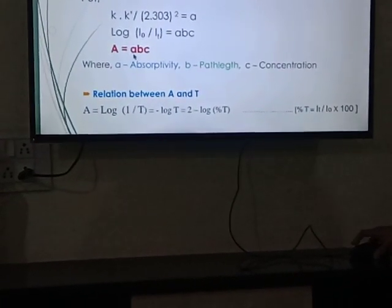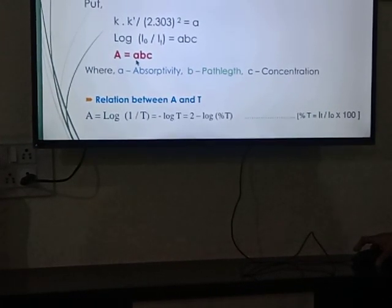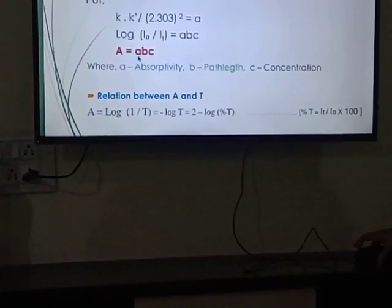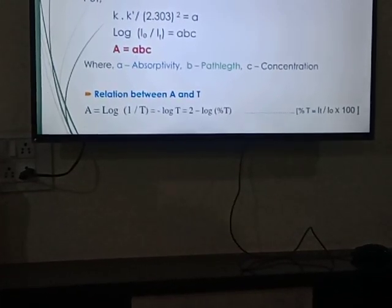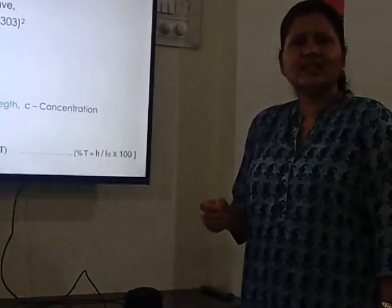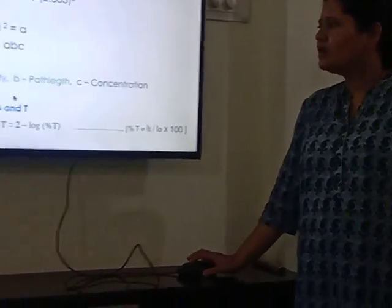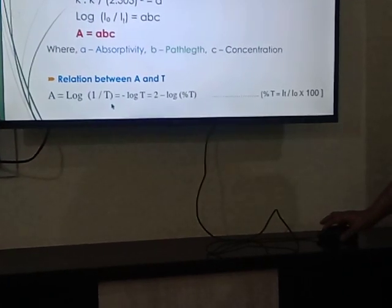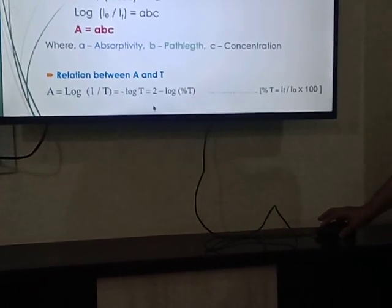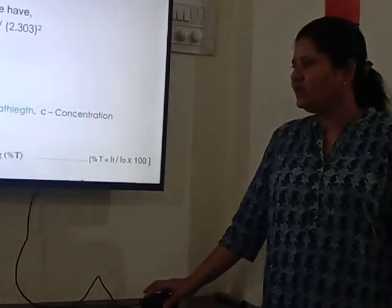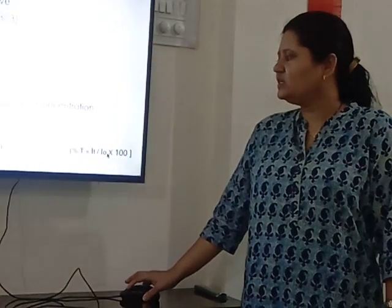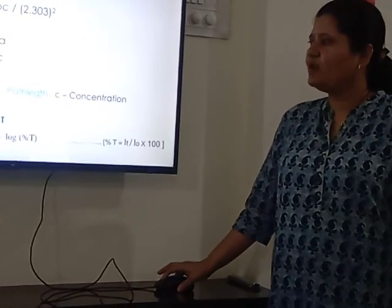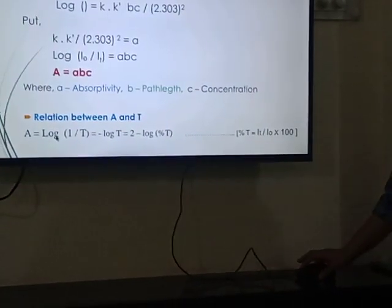In Beer's law, concentration is directly proportional to absorbance — as concentration increases, absorbance increases. The relation between absorbance and transmittance is: A = log(1/T) = −log(T) = 2 − log(%T). Substituting %T = (I_T / I_0) × 100, we finally relate absorbance to percent transmittance as A = −log(%T / 100).